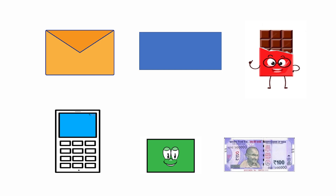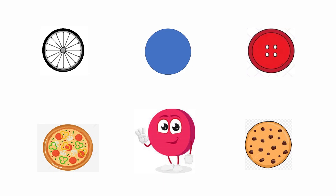What is the shape with four sides in which the two opposite sides are equal called? It's called a rectangle. Notice the different objects: the envelope, the calculator, the chocolate, and the hundred rupee note — all shaped with four sides and equal opposite sides. And a closed shape which is round all over with no sides is called a circle.